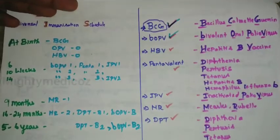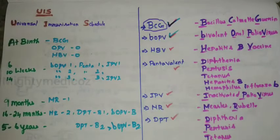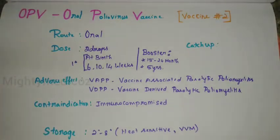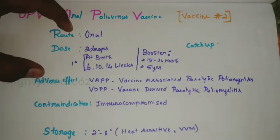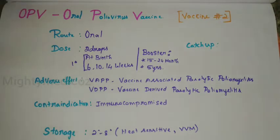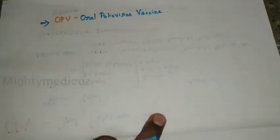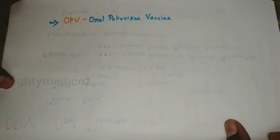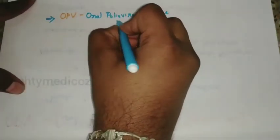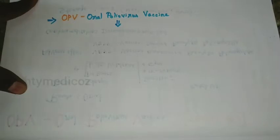Today's class is about bivalent OPV. In the previous video, BCG details were covered. Let us go into the discussion about bivalent OPV. What is OPV? OPV stands for oral poliovirus vaccine.